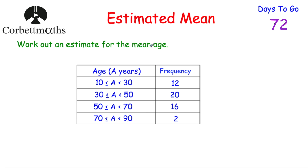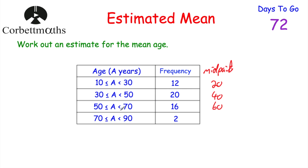To work out an estimate for the mean age, we've got age groups: 10 to 30, 30 to 50, 50 to 70, and 70 to 90. We don't know the actual ages, so we'll use the midpoints. Between 10 and 30 the midpoint is 20, so we're going to pretend there are 12 twenty-year-olds. Between 30 and 50 the midpoint is 40, between 50 and 70 it's 60, and between 70 and 90 it's 80.